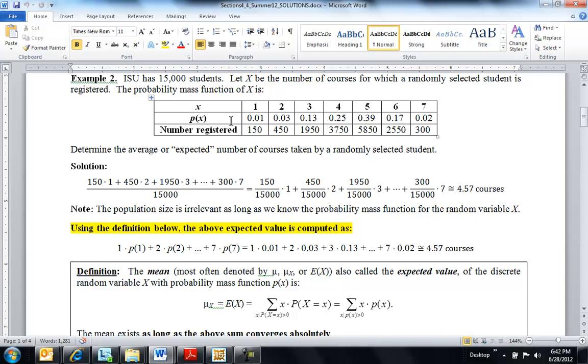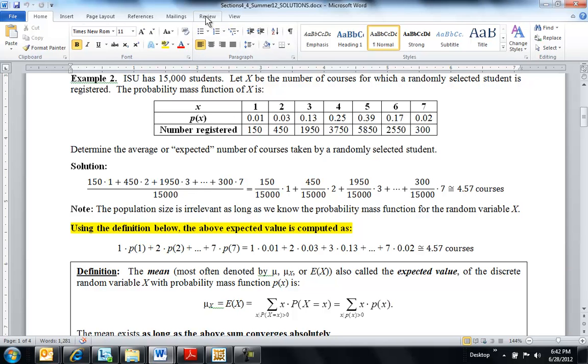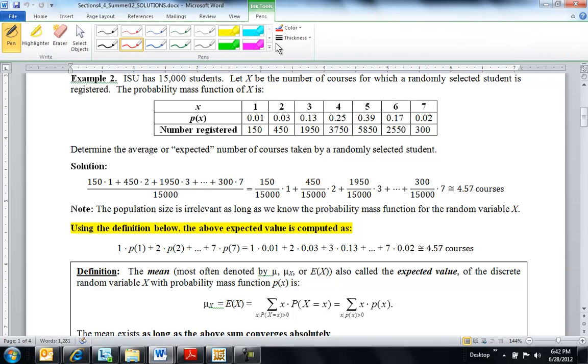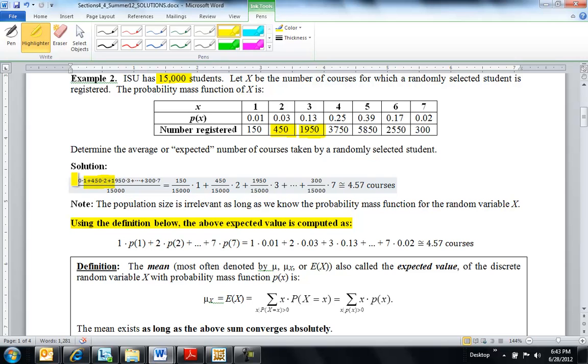In example two, what I'm trying to do is show you how the definition for expected value comes about. If you had 15,000 students, like this example here, and you were trying to find the mean number of courses they take, maybe 150 of them take one course, 450 take two courses, 1950 take three courses. If you wanted to find an average, you would just add up 151s, 452s, and just add up how many of each of these you have and divide by 15,000.